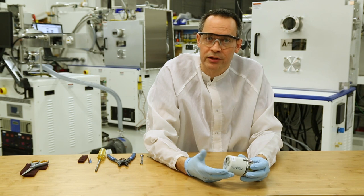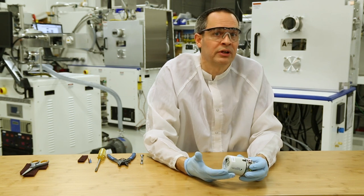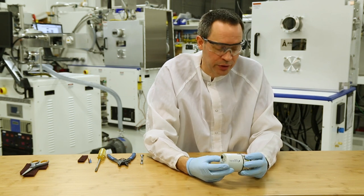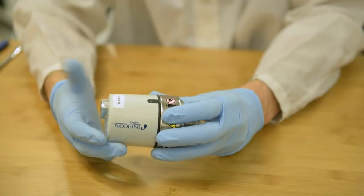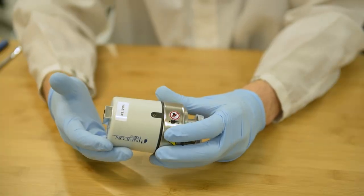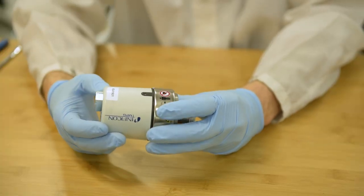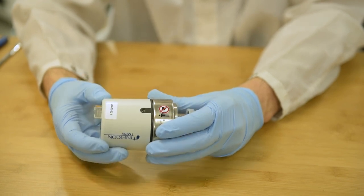Typically we can restore the gauge functionality simply by doing what we classify as a quick clean, and that's what we're going to demonstrate today. We're going to simply take it apart, clean the chamber and put it back together again, and in most cases we find that this will restore the gauge functionality.